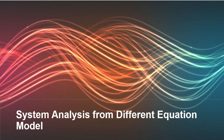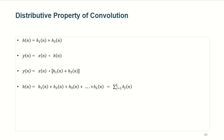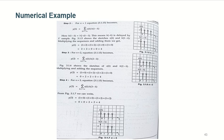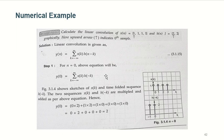We already know what is the convolution of a signal with its unit sample response. The signal is x of n and unit sample response is h of n. The formula is: y of n equals the summation from minus infinity to infinity of x of k times h of n minus k. From the properties of the convolution sum, we found that we can also write this as h of k times x of n minus k — we can interchange them.